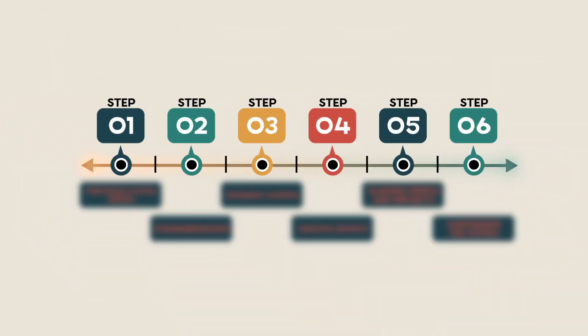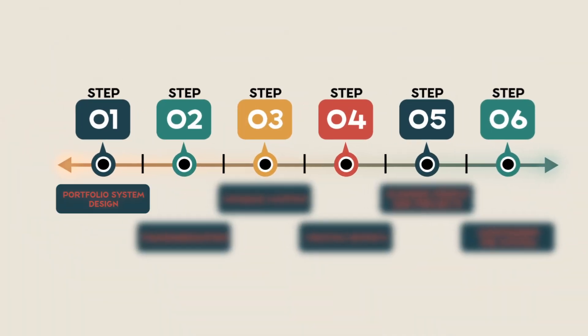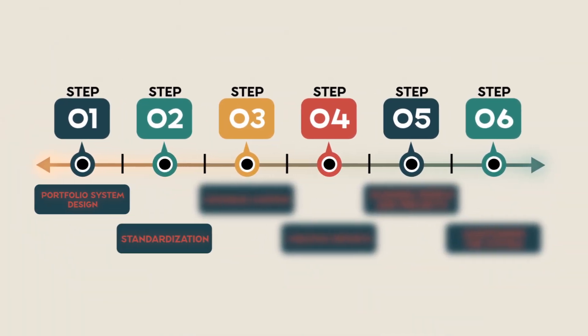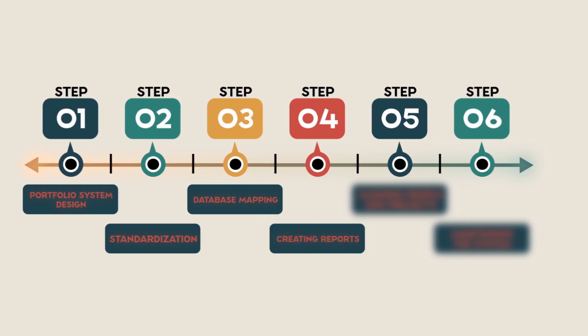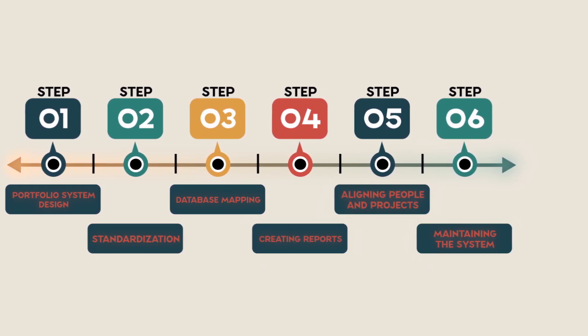This approach works whether your projects are tightly integrated or if they're completely independent. The six steps we are going to cover are portfolio system design, standardization, database mapping, creating reports, aligning people and projects, and maintaining the system. Let's get started.